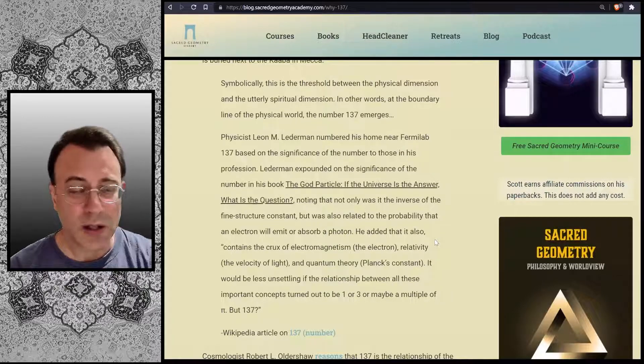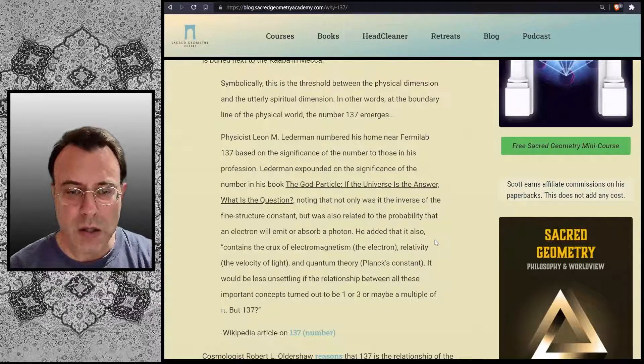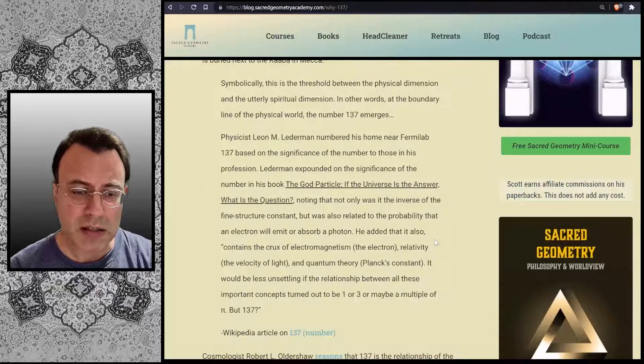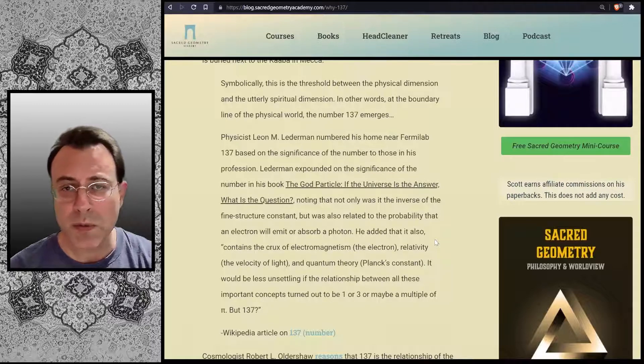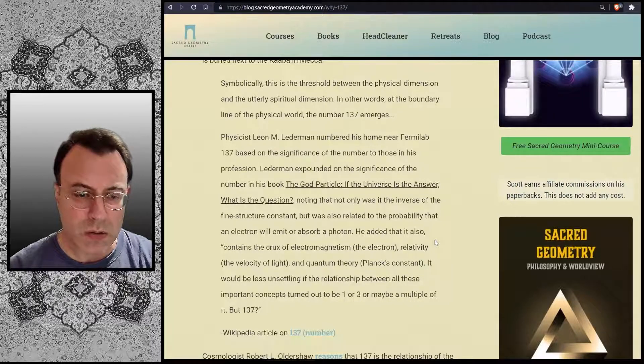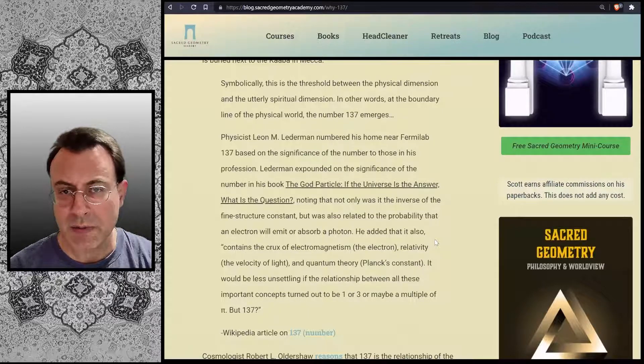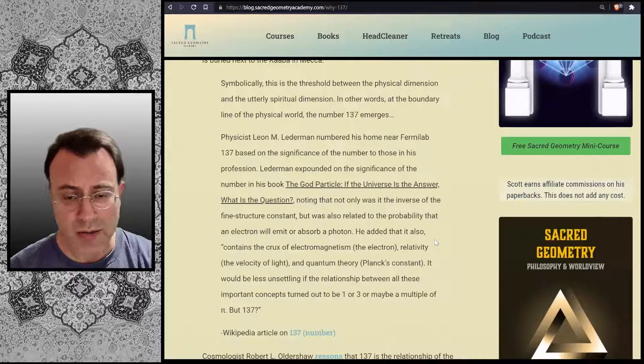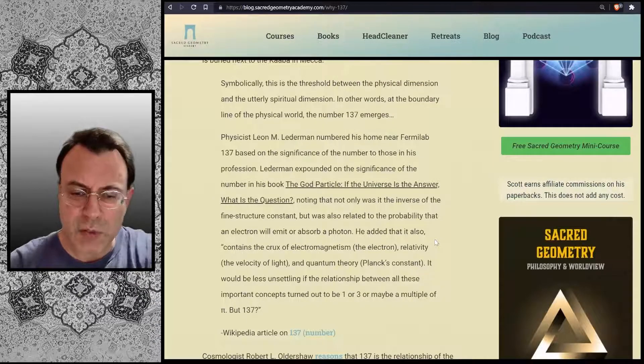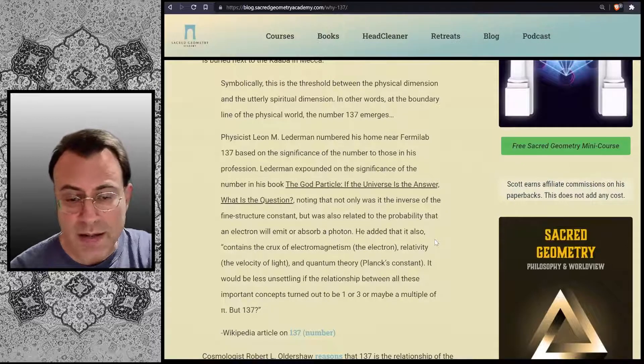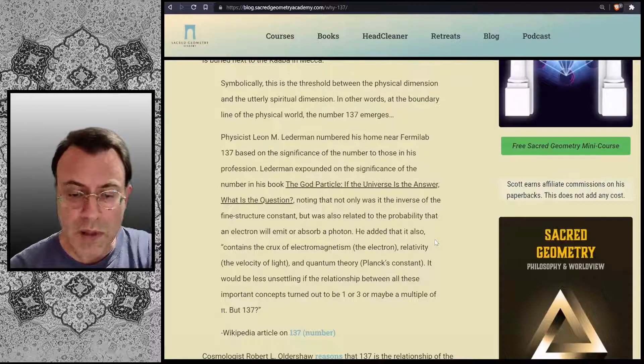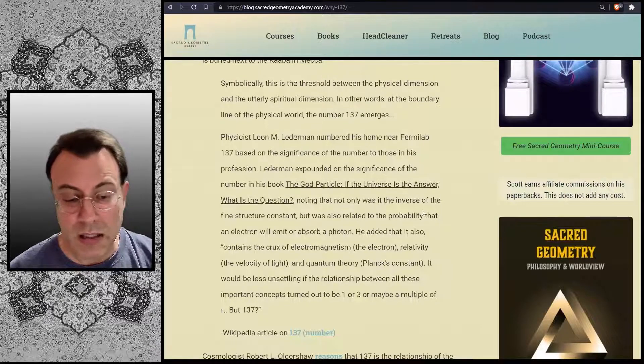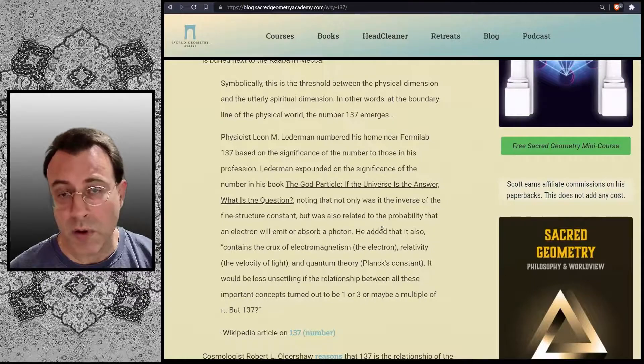"If the universe is the answer, what is the question?" Noting that not only was it the inverse of the fine structure constant, but was also related to the probability that an electron will emit or absorb a photon. He added that it also contains the crux of electromagnetism, the electron, relativity, the velocity of light, and quantum theory, Planck's constant. It would be less unsettling if the relationship between all these important concepts turned out to be one or three, or maybe a multiple of pi. But 137? Wikipedia article on the number 137.